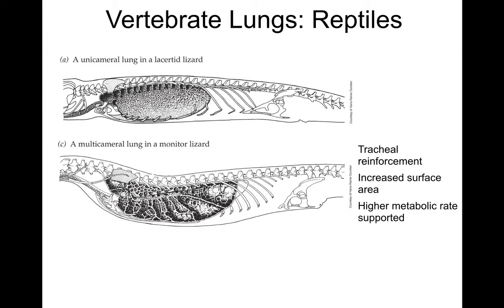Then we have the evolution of reptiles, and they have lungs with more structure. Most lizards have what's called a unicameral lung — a single cavity lung — as seen in a typical lacertid lizard. Monitor lizards (varanids) have a multicameral lung with multiple compartments, believed to increase surface area and support their higher metabolic rate. Both lung types have tracheal reinforcement to prevent airway collapse.